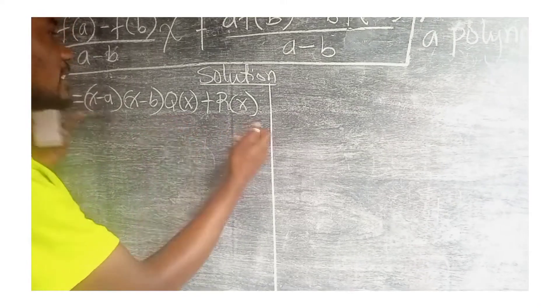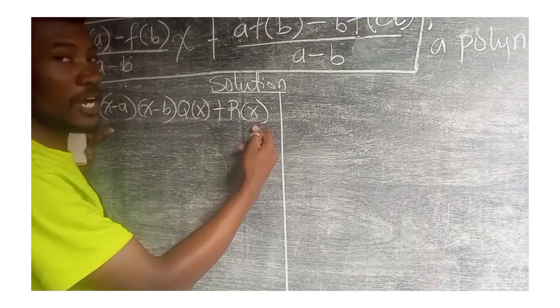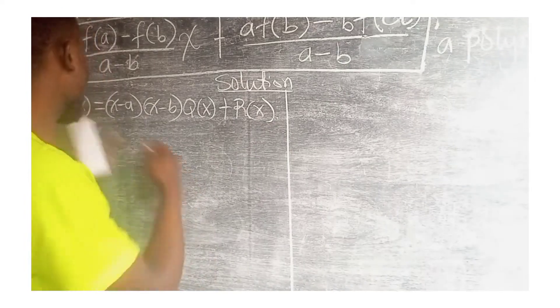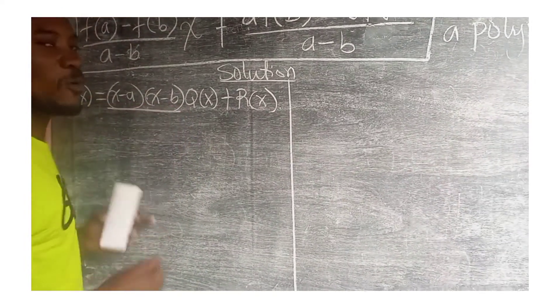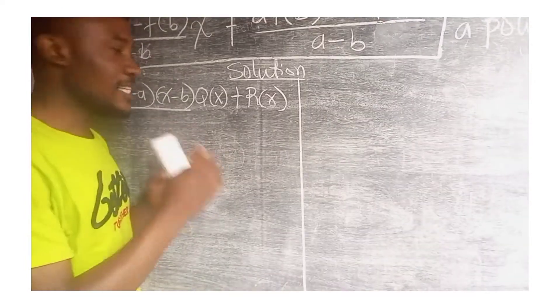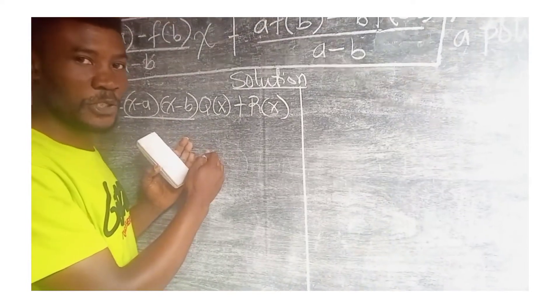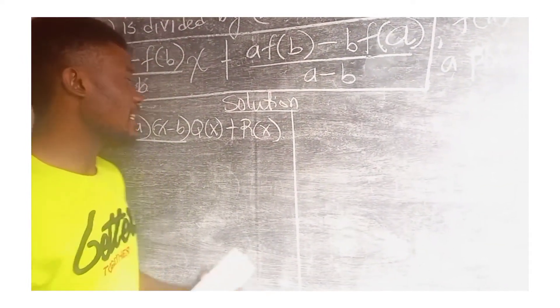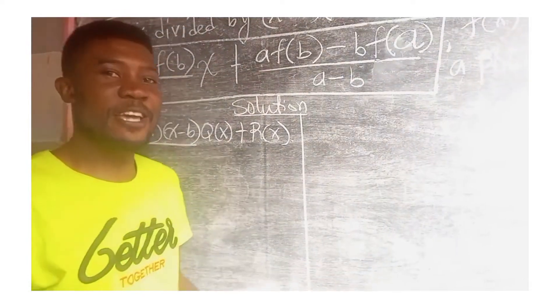Now, looking at this division algorithm or this function that I've written here, you see that f(x) is divided by a quadratic function. Since it is divided by a quadratic function, we know from the remainder theorem that the remainder is going to be a linear function.